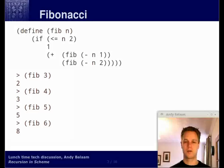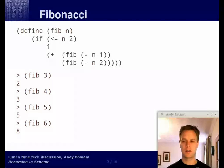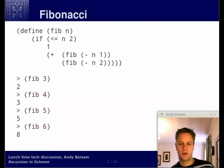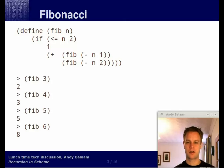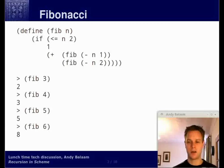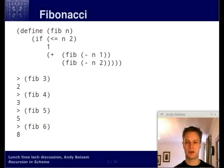This one's called Fibonacci. There's a famous mathematical series called the Fibonacci series, and the next term in the series is got by adding up the two previous terms. We start off with the first two things in the series defined to be one and one. The next is two, then three, then five, then eight. At the bottom of the screen we've got this fib function which, given a number, tells you the nth Fibonacci number. So the third Fibonacci number is 2, the fourth is 3, and so on.